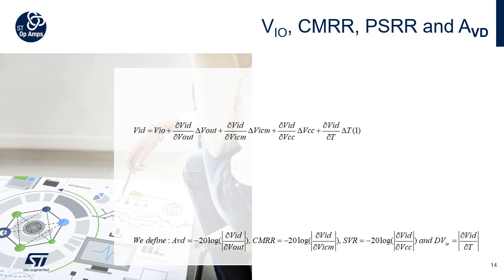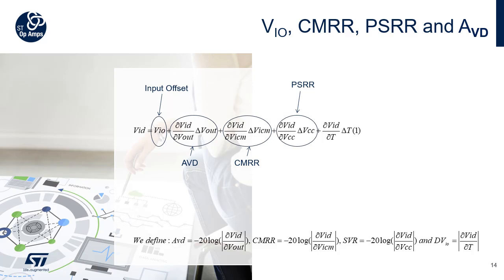The power supply rejection ratio PSRR and the differential voltage amplification AVD are also important parameters for precision measurements, but the op-amp's PSRR will have a low impact if the power supplies are well decoupled. It is the same for AVD — if the gain of the amplifier is not so high (less than 1000), this parameter will not create issues. To take into account all parameters likely to impact precision, we can use an equation where the first term expresses the input offset voltage, the second the AVD, the third the CMRR, the fourth the PSRR, and the last term expresses the input voltage drift with temperature.